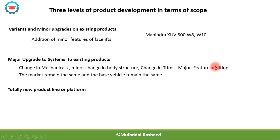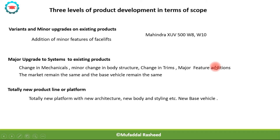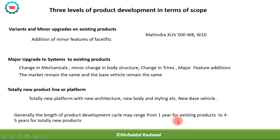The final variety is the totally new product line or platform. There is a difference between a product and a platform — a platform is a number of similar types of products based on similar architectural arrangements. A new platform means totally new architecture, new body, new styling, and catering to a new market with a totally new base vehicle.